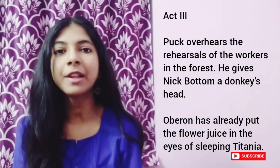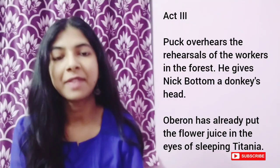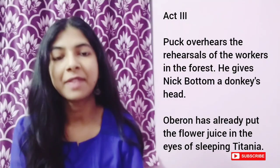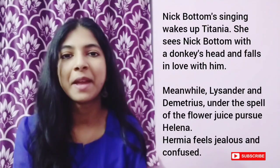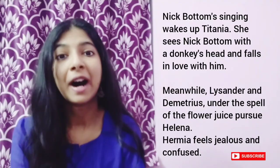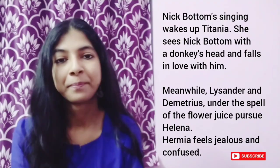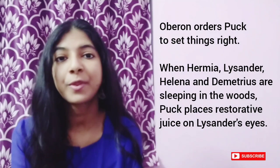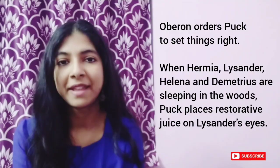Act 3. Puck overhears the rehearsal of the workers in the forest and plays a trick on them by giving Nick Bottom a donkey's head. Meanwhile, Oberon has placed the juice on sleeping Titania's eyes. Nick Bottom's singing wakes up Queen Titania, and she sees him with a donkey's head and falls in love with him, entertaining him with her fairies. Meanwhile, Lysander and Demetrius, under the spell of the flower juice, pursue Helena. Hermia is jealous and confused because no one is giving her any attention. Oberon and Puck watch the chaos, and Oberon tells Puck to set things right. When Hermia, Lysander, Demetrius and Helena are sleeping in the woods after arguing the entire day, Puck places restorative juice on Lysander's eyes.